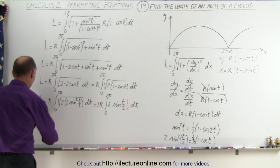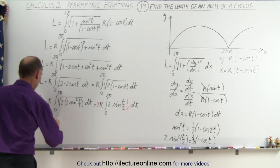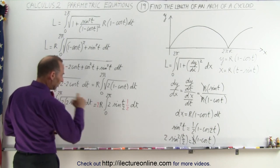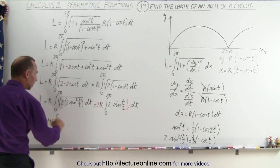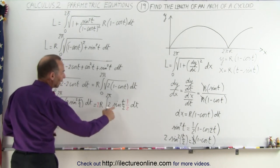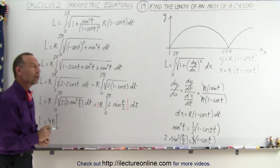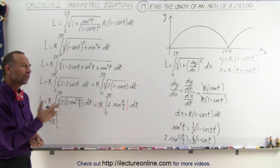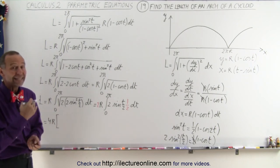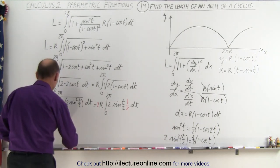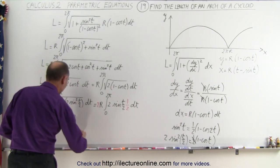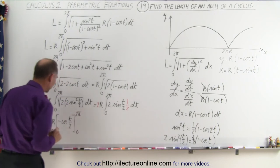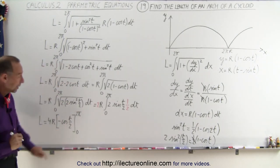This becomes L = 4r times the integral of sin(t/2) dt. The integral of sine is negative cosine, so we get negative cosine(t/2), evaluated from 0 to 2π.